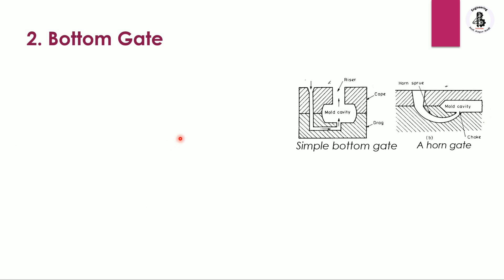The second type is the bottom gate. The pouring basin receives the molten metal, which then flows through the sprue, runner, and into the mold cavity. The riser is visible at the top. There is a cope and drag with a parting line in between. The molten metal enters from the pouring basin towards the sprue, runner, gating system, mold cavity, and towards the risers — all entering from the bottom side of the mold cavity.